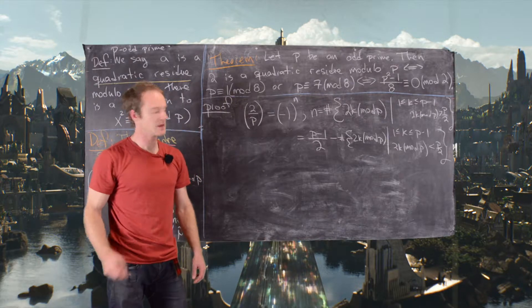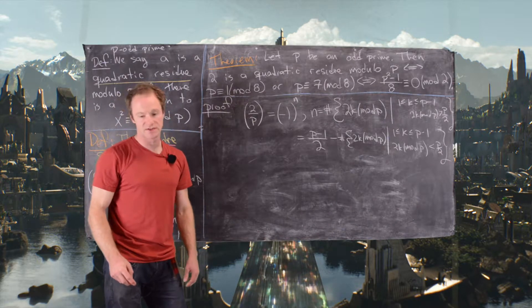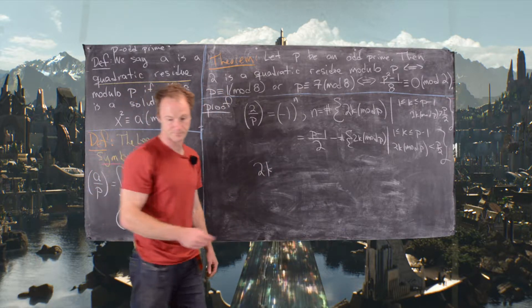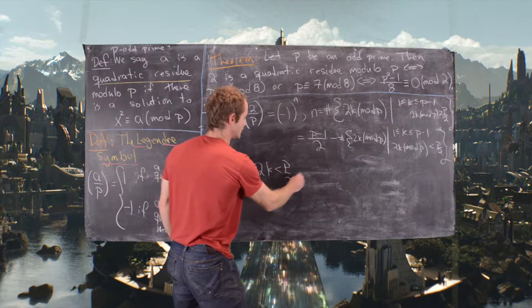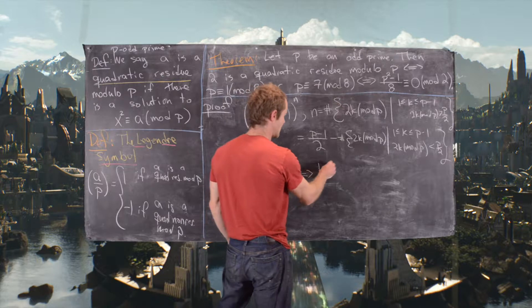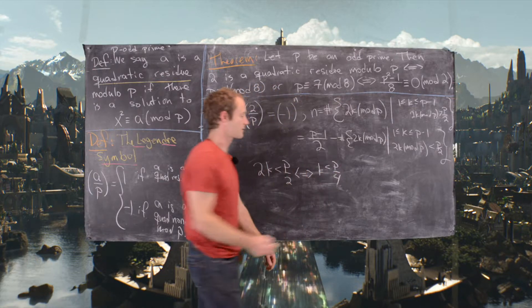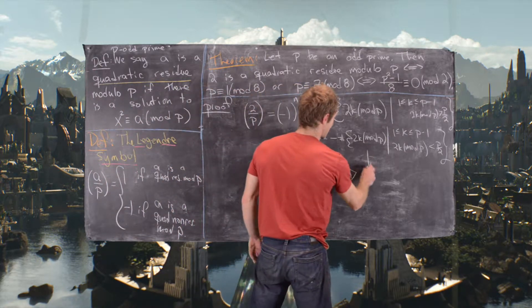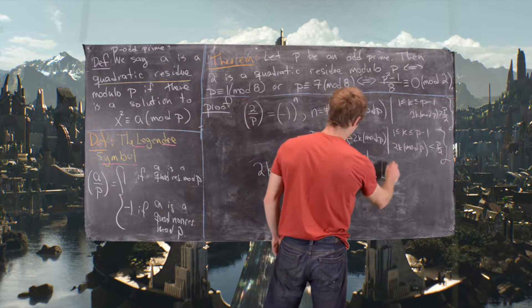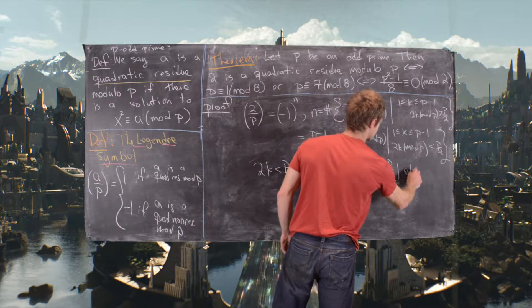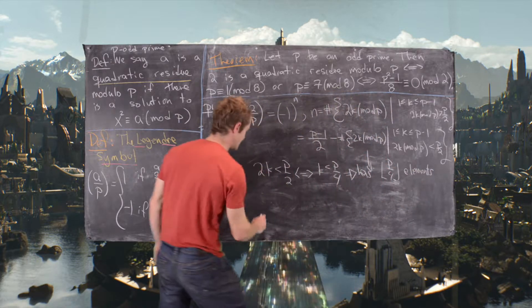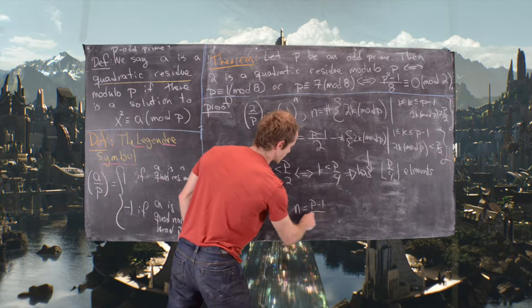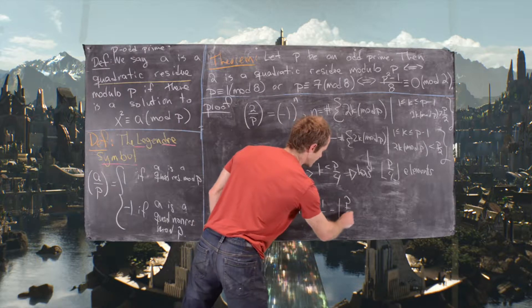Notice that 2k < p/2 if and only if k < p/4. So that set has exactly ⌊p/4⌋ elements. Therefore n = (p−1)/2 − ⌊p/4⌋.